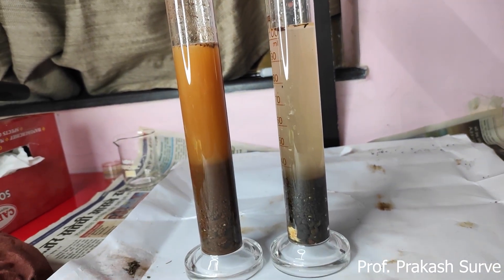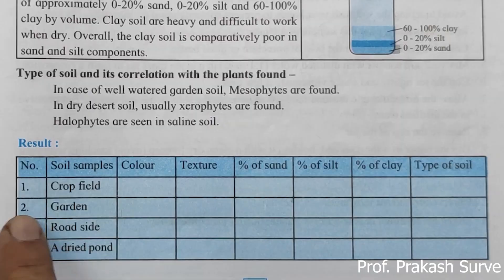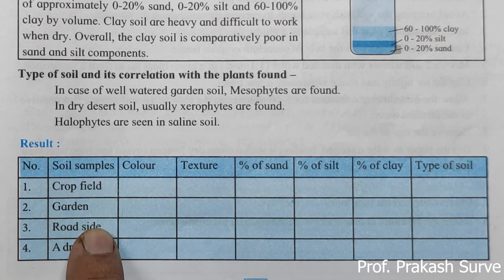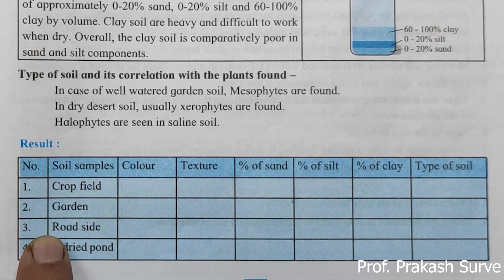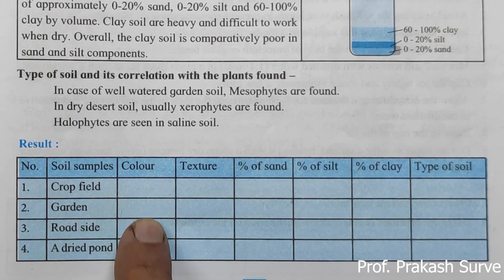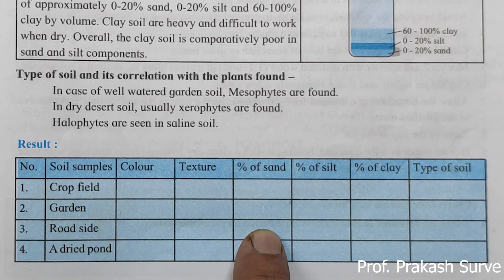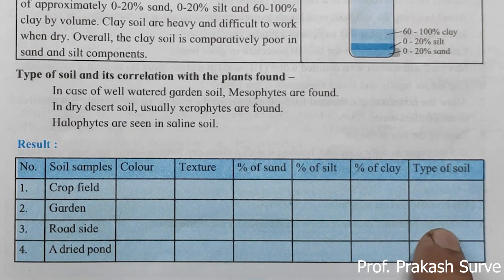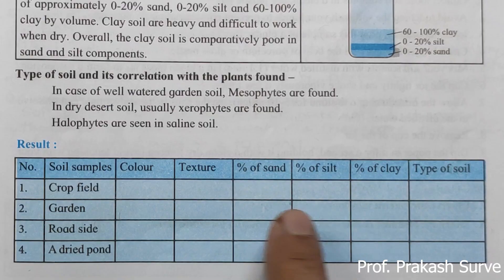This is the practical we have performed about soil texture. After 15 minutes we fill in the result for garden soil (sample B) and roadside soil (sample A). In the exam, two samples will be given and you have to find out the texture of each soil. You have to write the color, the texture, the percentage of sand, percentage of silt, percentage of clay, and mention which type of soil it is — sandy soil or loamy soil.